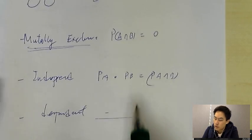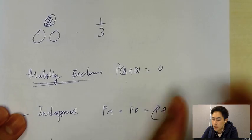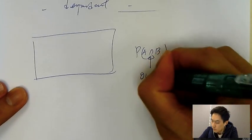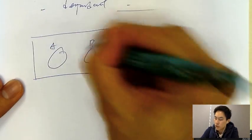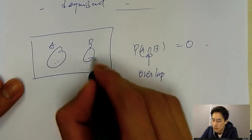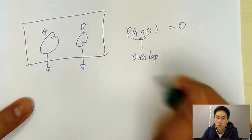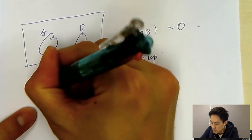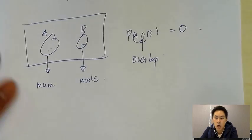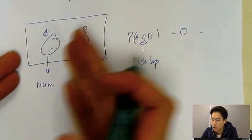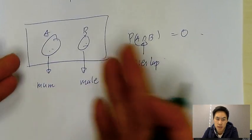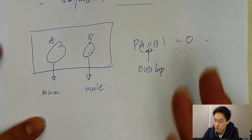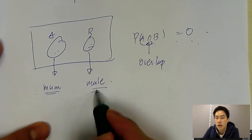For mutually exclusive events, P(A∩B) = 0. The '∩' symbol means overlap, so A and B have no overlap — they are completely separate events. A good example: event A is 'your mom' and event B is 'a male.' Your mom cannot be a male, so there is no overlap and P(A∩B) = 0. Remember: mom and male — they can never be the same.